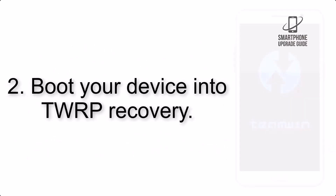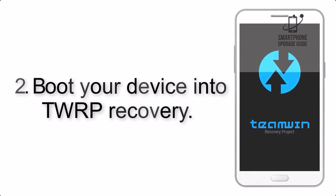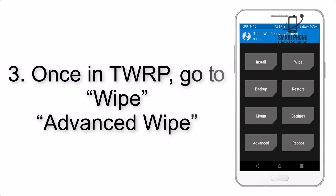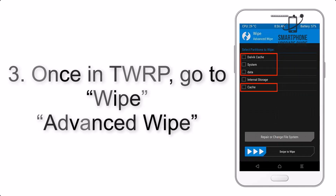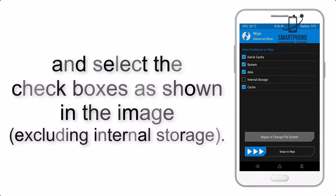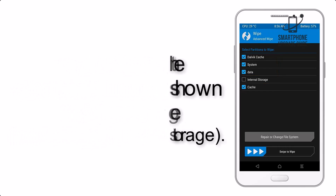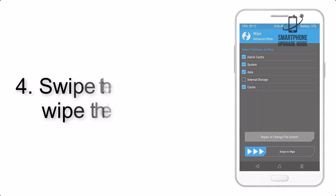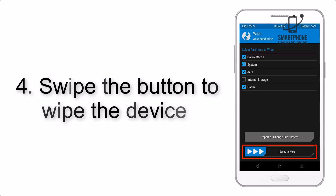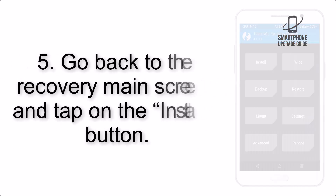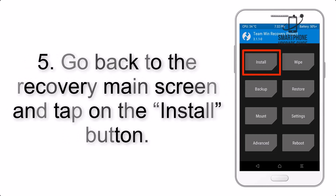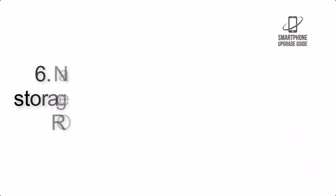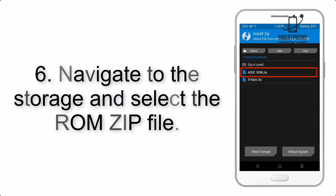Step 2: Boot your device into TWRP recovery. Once in TWRP, click on Advanced Wipe and select the checkboxes as shown in the image, excluding internal storage. Step 4: Swipe the button to wipe the device.